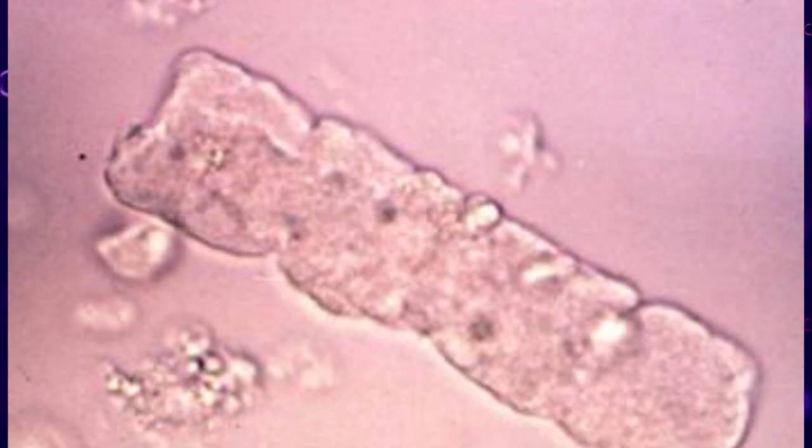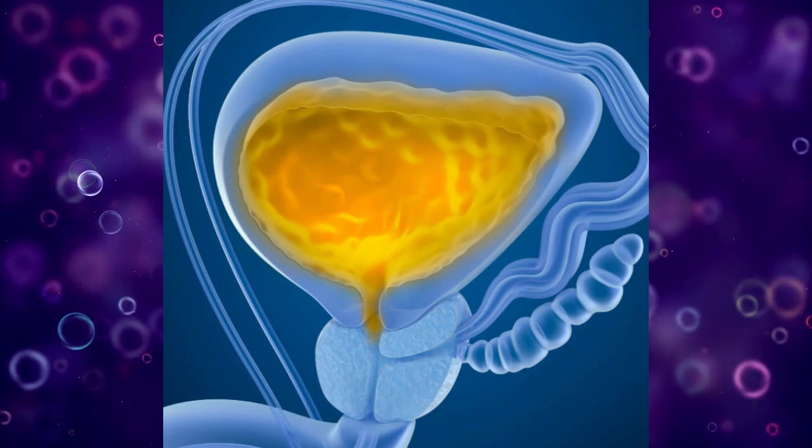Casts are the result of solidification of protein in the lumen of the kidney tubules. Once formed, these casts of the tubule are eliminated via the urine and may be seen in the urine sediment.